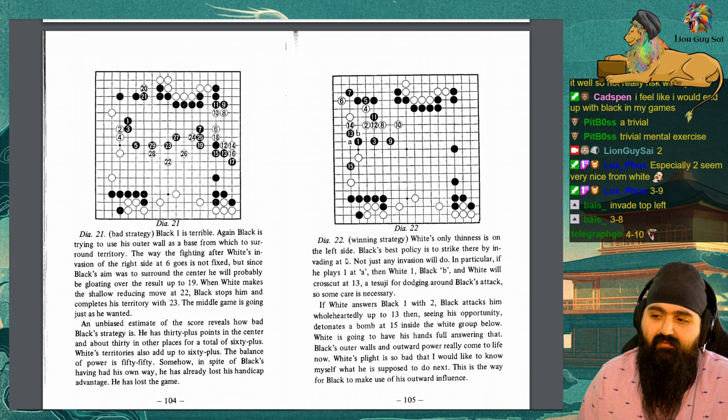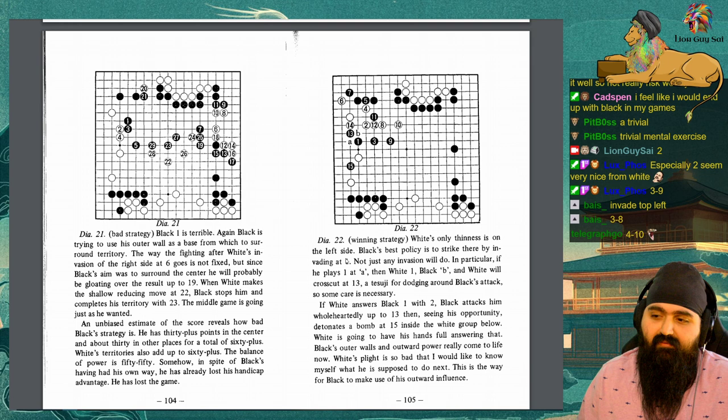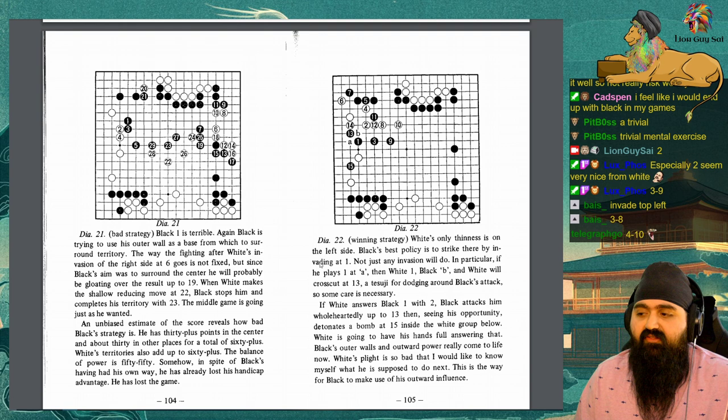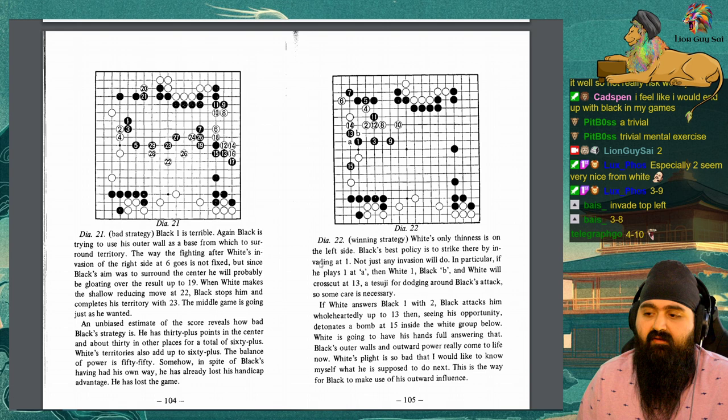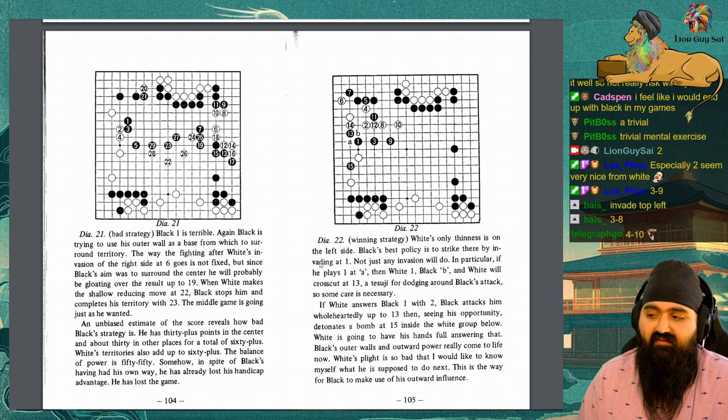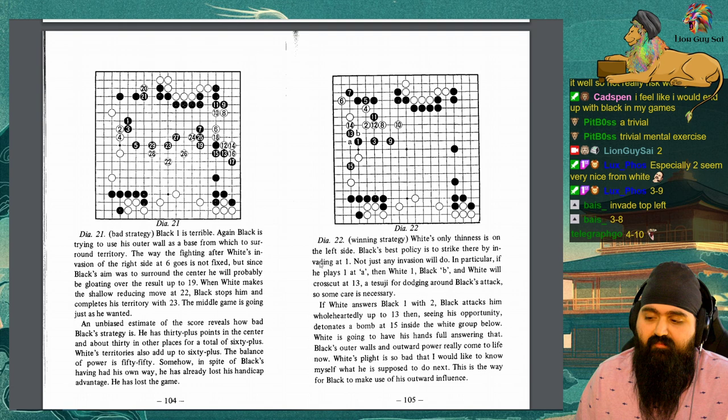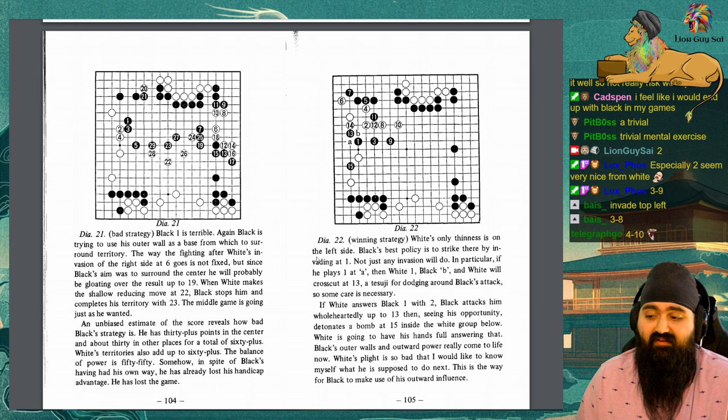Diagram 21. Bad strategy. Black 1 is terrible. Again, black is trying to use his outer wall as a base from which to surround territory. The way the fighting after white's invasion of the right side at 6 goes is not fixed, but since black's aim was to surround the center, he will probably be gloating over the result up to 19. When white makes the shallow reducing move at 22, black stops him and completes his territory with 23. The middle game is going just as he wanted.